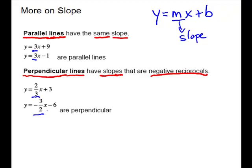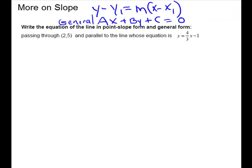So these lines are perpendicular. For our first problem, it says write the equation of the line in point-slope form and general form. They give us a point and tell us our line is parallel to a given line. The important piece is that if it's parallel, our slope will be the same — so our slope will also be four-thirds. That gives us all the information we need: we have a point and a slope.